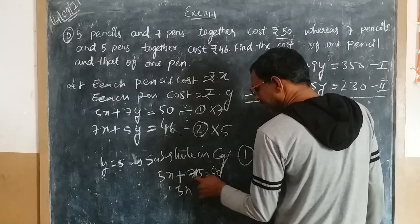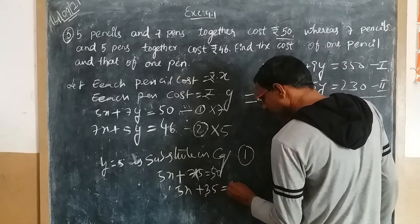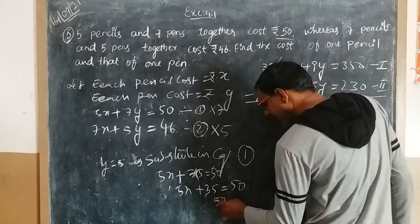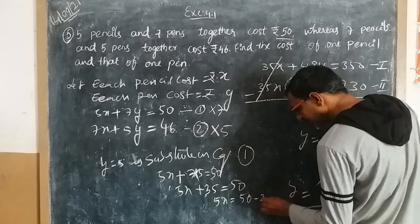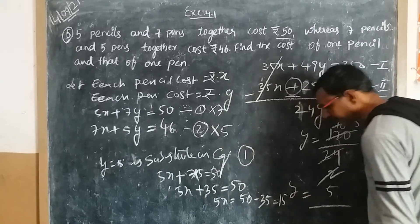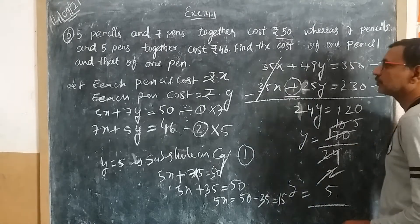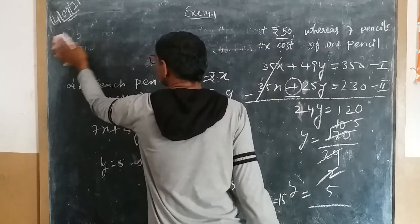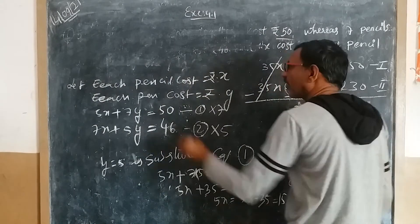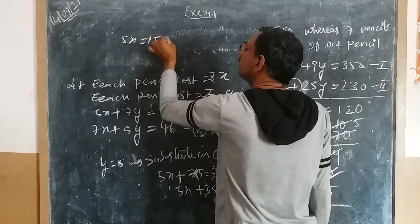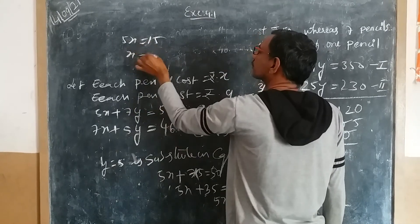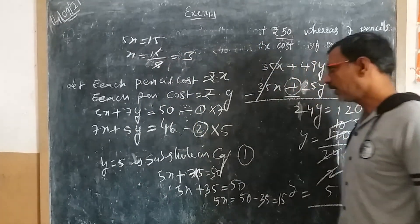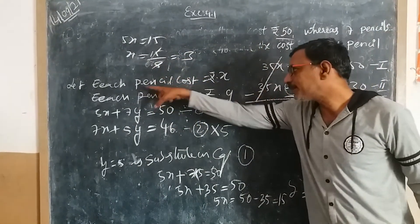Seven times 5 is 35. So 5x + 35 = 50. Then 5x equals 50 minus 35, which is 15. Therefore x equals 15 divided by 5, which is 3. Each pencil costs 3 rupees.